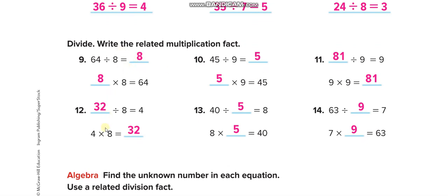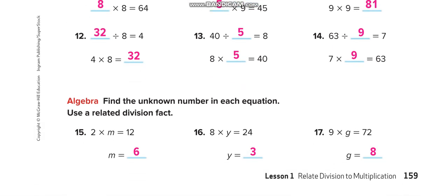Here you need to find the missing number and then create the fact family with it. For 64 divided by 8, think: 8 times what equals 64? 8 times 8 equals 64. Solve all these questions and match your answers from this video. For finding unknowns: 2 times what equals 12 — answer is 6; 8 times what equals 24 — answer is 3; 9 times what equals 72 — answer is 8.